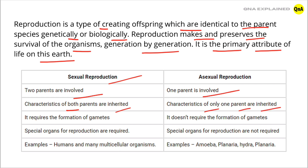In sexual reproduction, it requires the formation of gametes. In asexual reproduction, it doesn't require the formation of gametes. Special organs for reproduction are required in sexual reproduction, while in asexual reproduction, special organs for reproduction are not required.